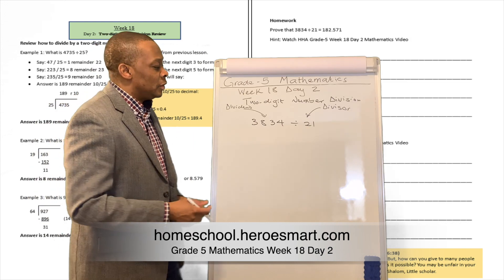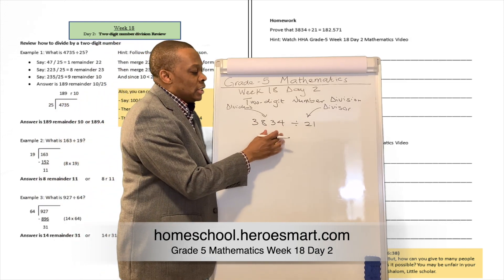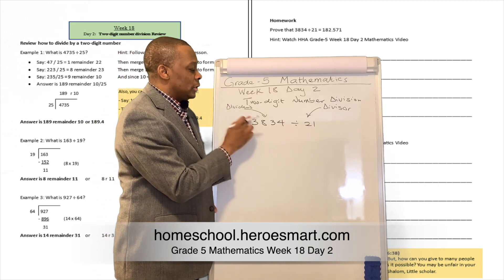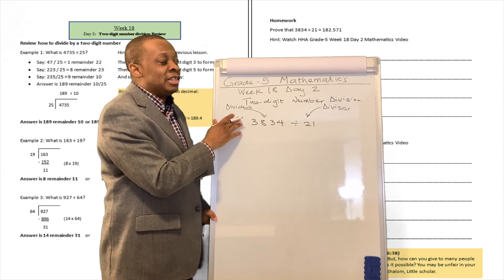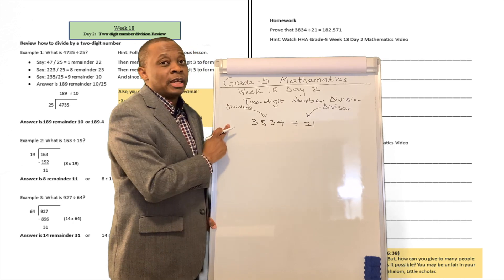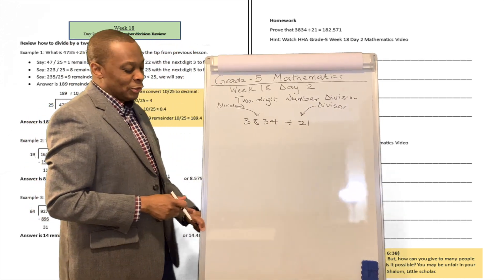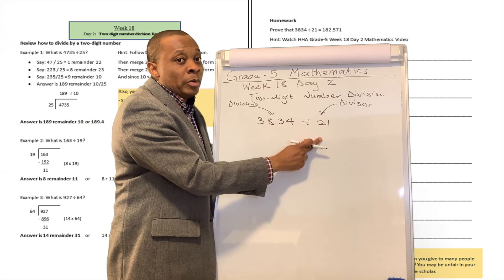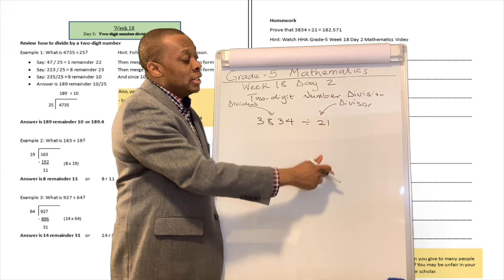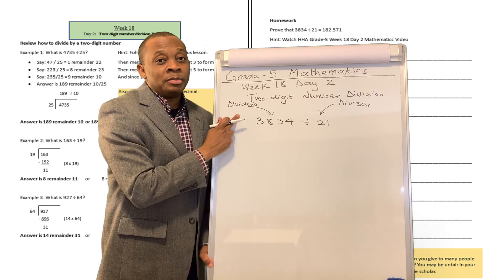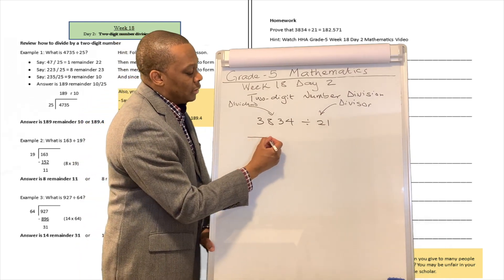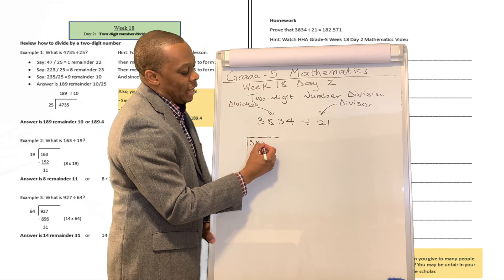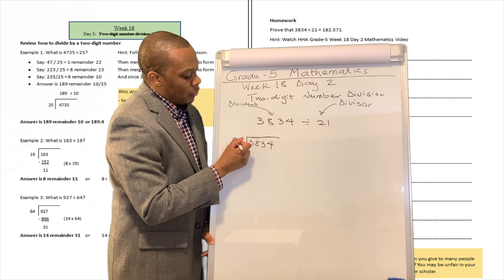So let's look at this example over here. They're telling us: what is 3,834 divided by 21? Well, 3,834 is going to be the dividend — the number that is going to be divided by another number is called a dividend. And the number that is going to be performing the division operation is called the divisor. The divisor is going to be 21 in this case. So remember this half square — you're going to put your dividend inside this half square, and you're going to put your divisor right outside.